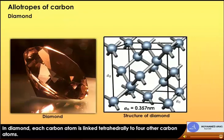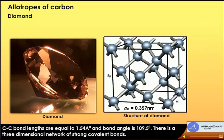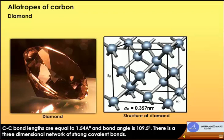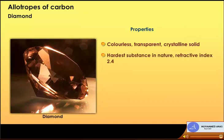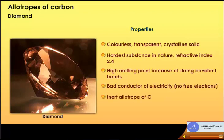Diamond: in diamond, each carbon atom is linked tetrahedrally to four other carbon atoms. C-C bond lengths are equal to 1.54 Angstrom and the bond angle is 109.5 degrees. There is a three-dimensional network of strong covalent bonds. Properties: colorless, transparent, crystalline solid; hardest substance in nature; refractive index 2.4; high melting point due to strong covalent bonds; bad conductor of electricity with no free electrons; inert allotrope of carbon.